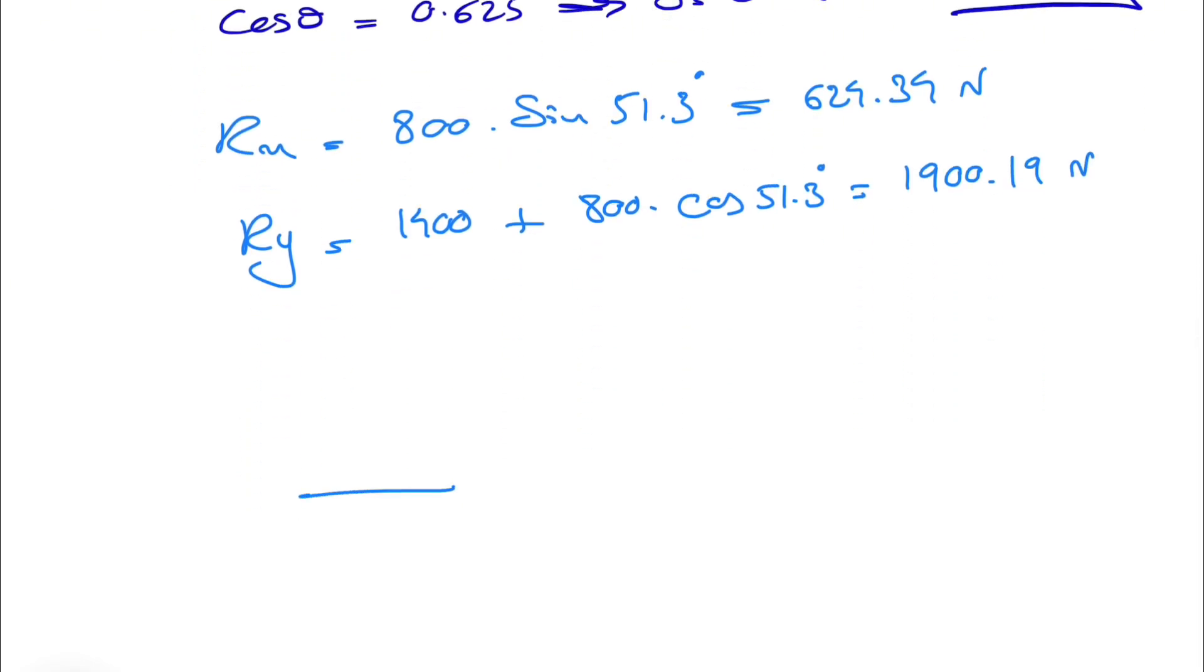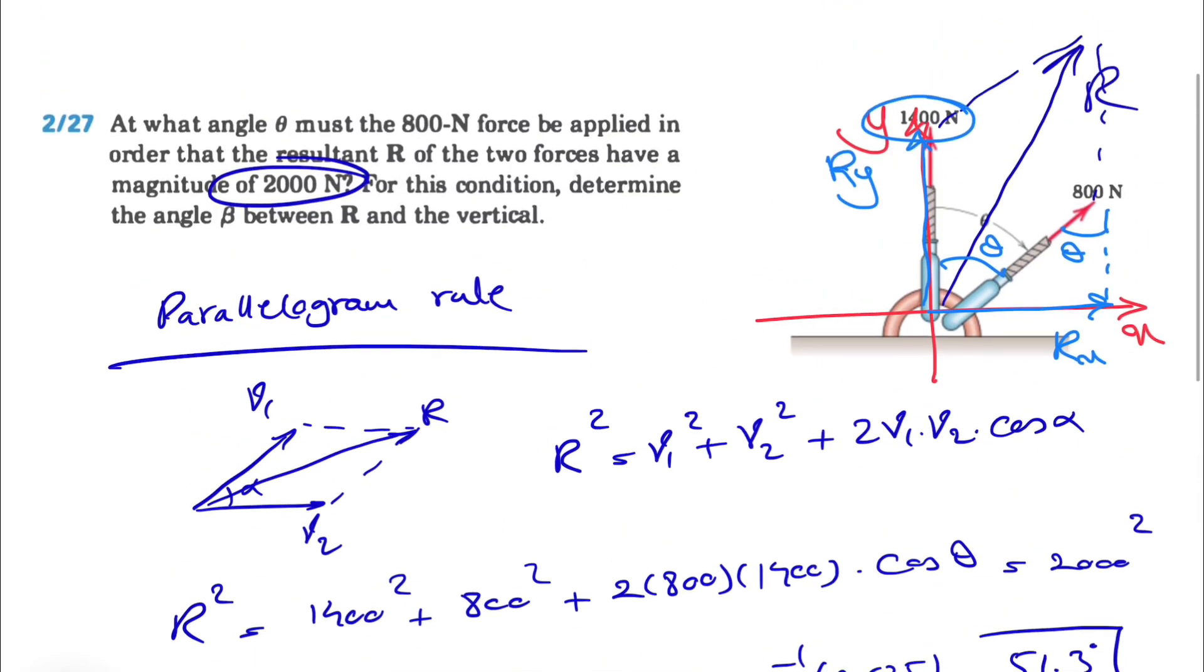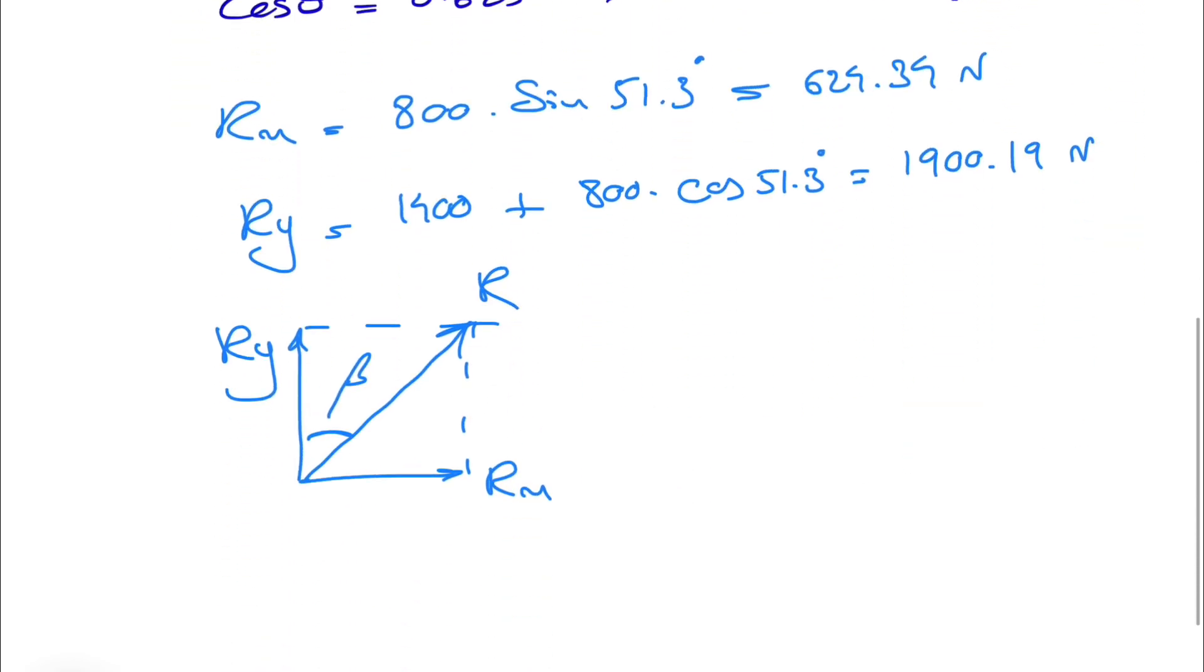Now that we have Rx and Ry, this is our resultant R that we found, and what we're interested in is this angle beta, which is the angle between R and the vertical or Ry axis.